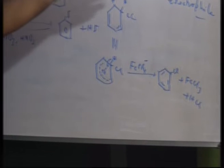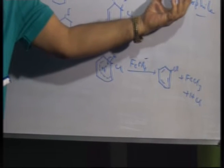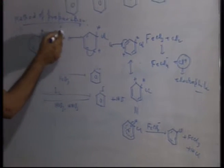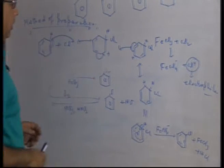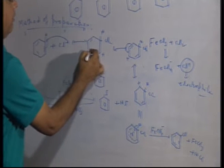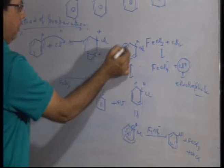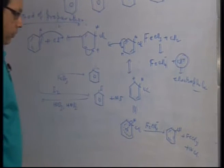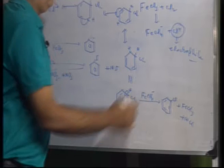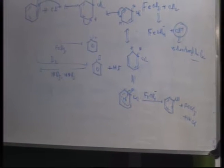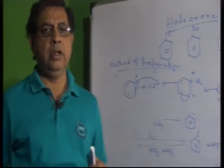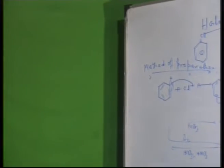In summary, in the first step FeCl3 reacts with chlorine to form the electrophile Cl⁺. Benzene's pi electrons are attacked by this electrophile, forming an intermediate carbocation that is stabilized by resonance. After resonance stabilization, the proton is released by FeCl4⁻ to form chlorobenzene. This is the first method: halogenation of benzene.